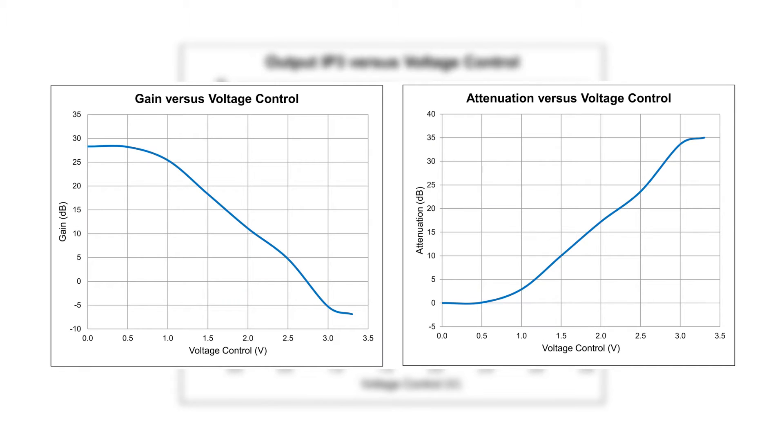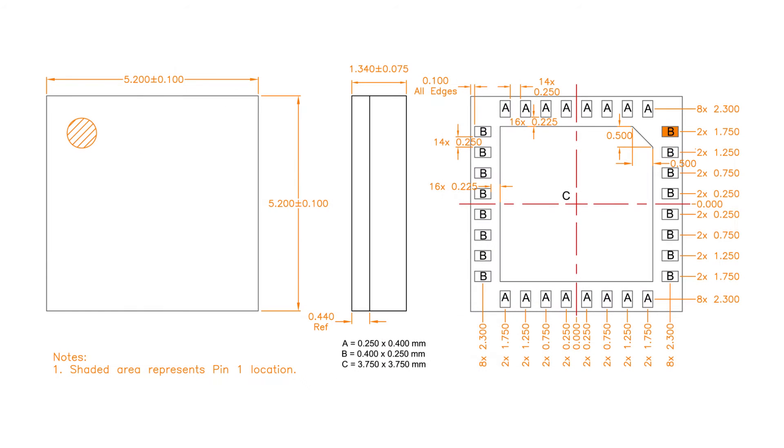A mode logic pin enables the VGA to be selected for either 0 volts to plus 3 volts or a plus 3 volt to 0 volt analog-controlled attenuation slope.